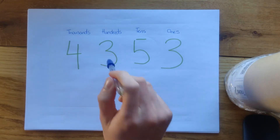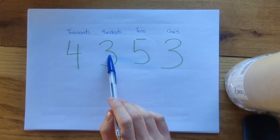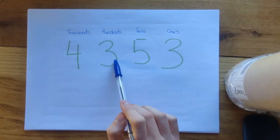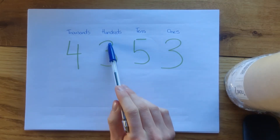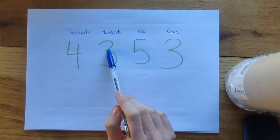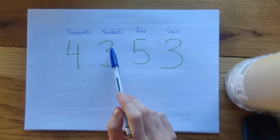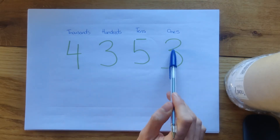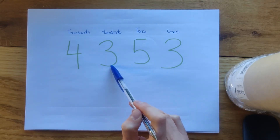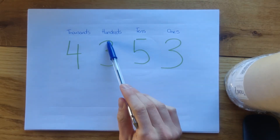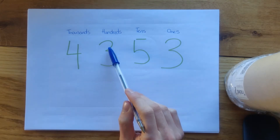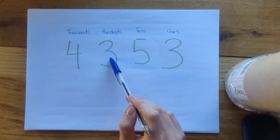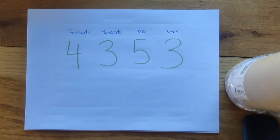Let's say we wanted to round this number to our closest hundred. We're going to think about the hundreds column first — it's either going to go down to 4,300 or up to the next hundred which will be 4,400. To work out which, we need to think about what's right in the middle.